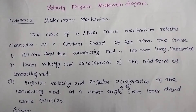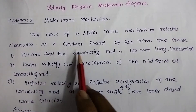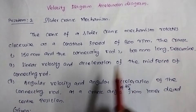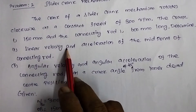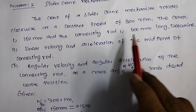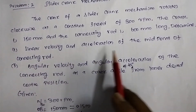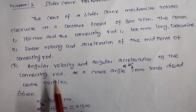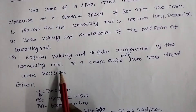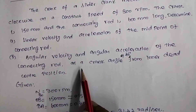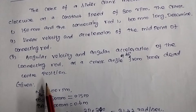The crank of a slider-crank mechanism rotates clockwise at a constant speed of 300 rpm. The crank is 150 mm and the connecting rod is 600 mm long. Determine the linear velocity and acceleration of the midpoint of the connecting rod, and the angular velocity and angular acceleration of the connecting rod at a crank angle of 45 degrees from the inner dead center.